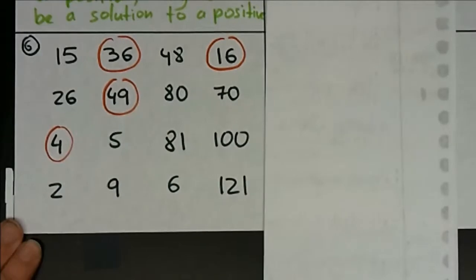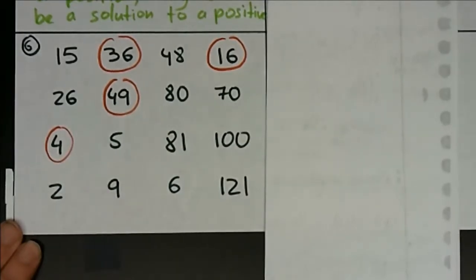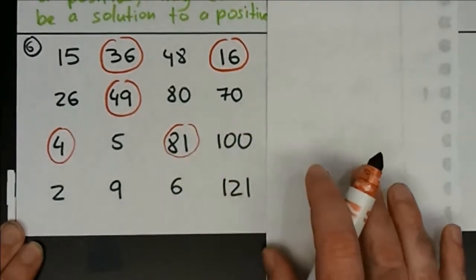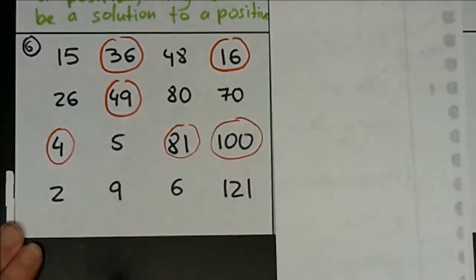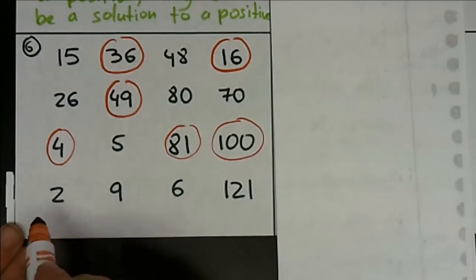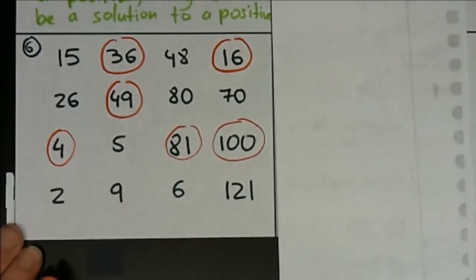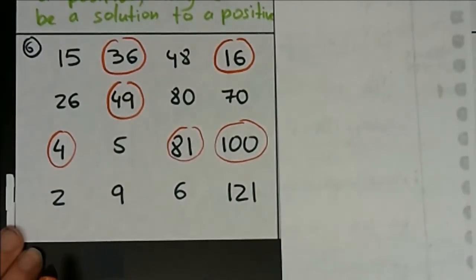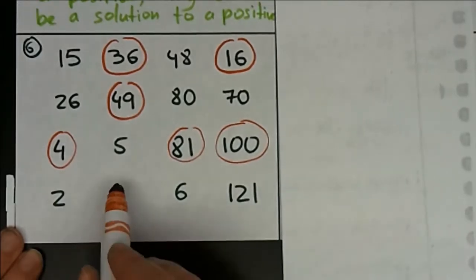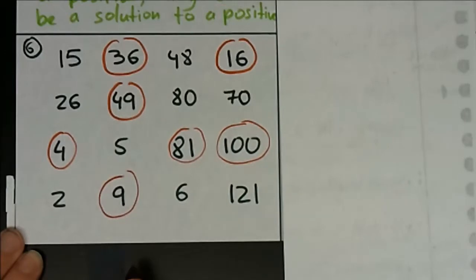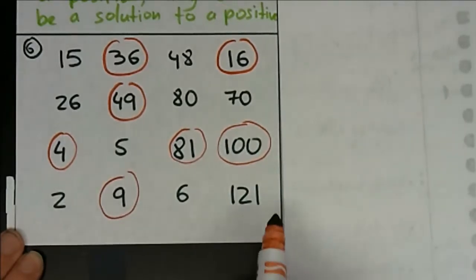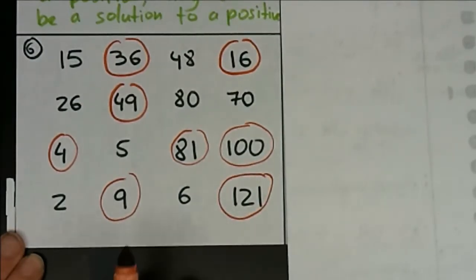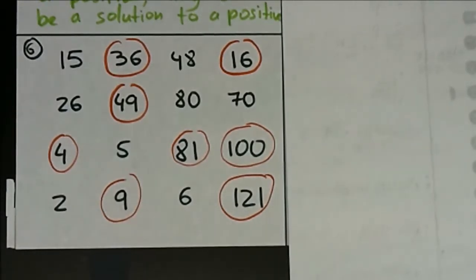4 — yes, two times two or negative two times negative two. 5 — nope. 81 — yes, nine times nine or negative nine times nine. 100 works too, ten times ten or negative ten times negative ten. 2 — that's a two, not a z — does not work; there's no two numbers that are the same you can multiply to get two. 9 works, three times three or negative three times three. 6 — nope. And 121 — this one works; 121 can be written as eleven times eleven or negative eleven times negative eleven. That was the tricky one.